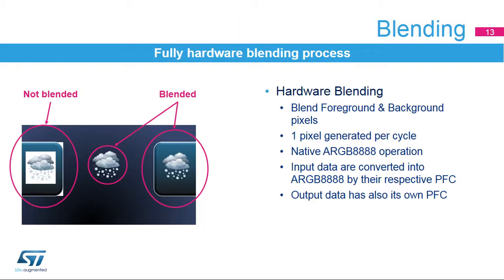The fully hardware blender allows blending of a foreground image and a background image with transparency. This can be used to draw bitmap images of any shape with a perfect rendering. One pixel is generated per cycle, making this complex operation much more efficient than if it was done by the CPU.